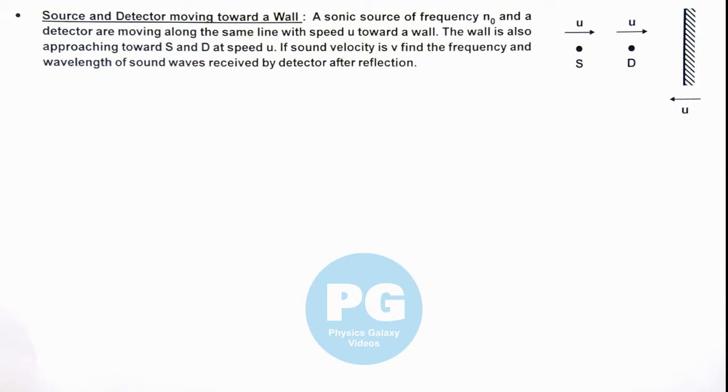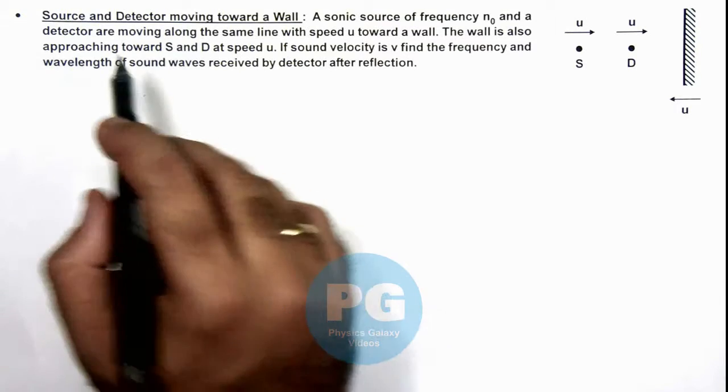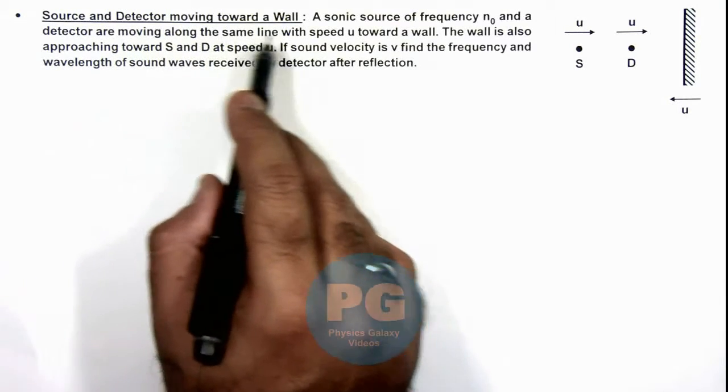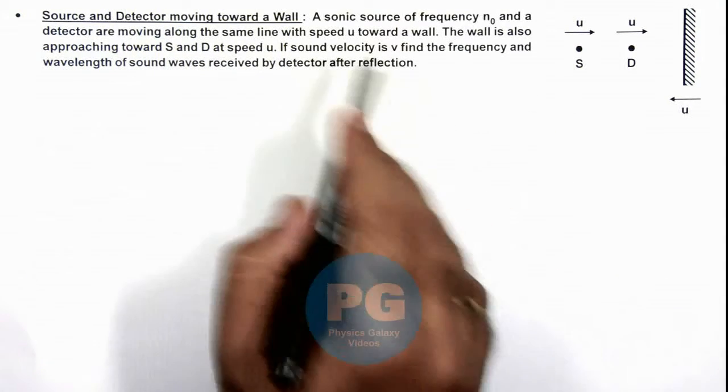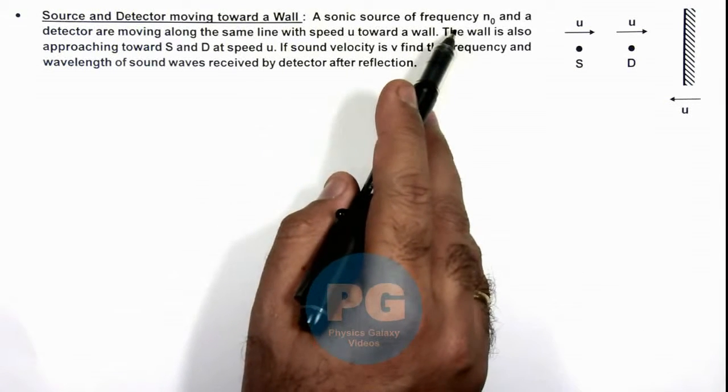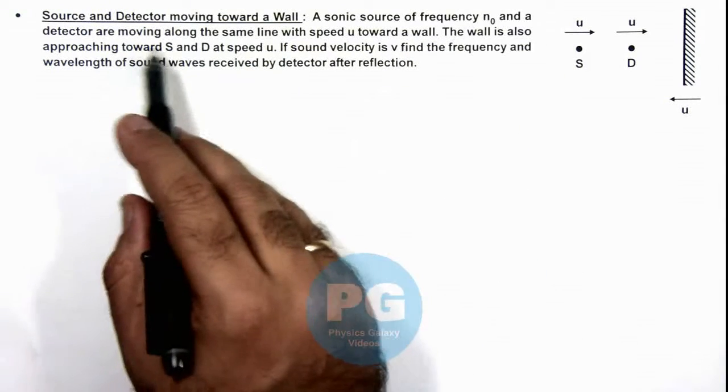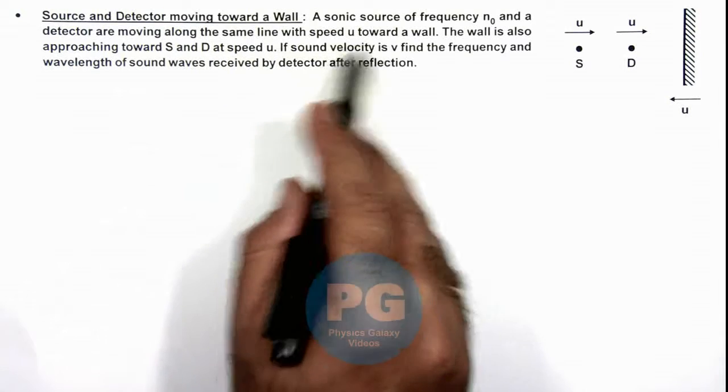In this illustration, we'll analyze a situation when source and detector are moving toward a wall. We are given that a sonic source of frequency n₀ and a detector are moving along the same line with speed u toward a wall.